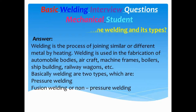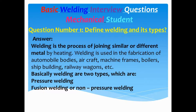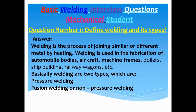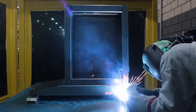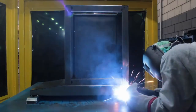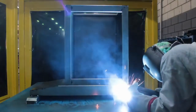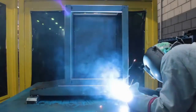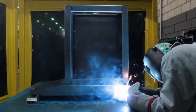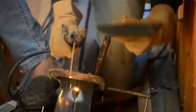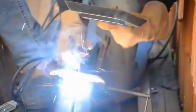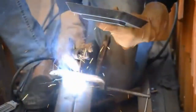Question number one: Define welding and its types. Answer: Welding is the process of joining similar or different metals by heating. Welding is used in the fabrication of automobile bodies, aircraft, machine frames, boilers, shipbuilding, railway wagons, etc. Basically, welding is of two types: pressure welding and fusion welding or non-pressure welding.